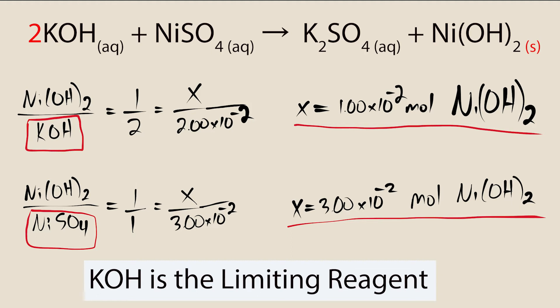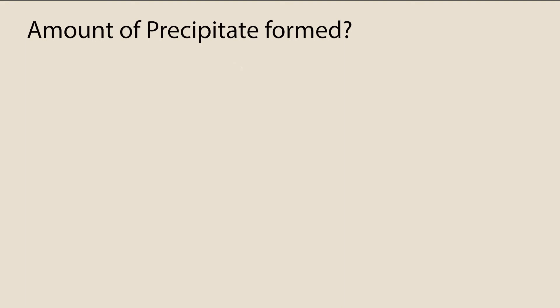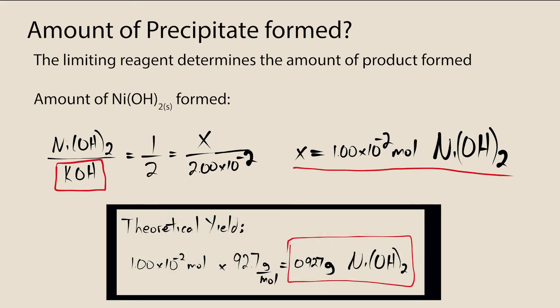Conceptually, this means that once 1.00 × 10⁻² moles of nickel-2-hydroxide forms, the potassium hydroxide will be fully consumed and no more precipitate can form. By figuring out the limiting reagent, we've basically figured out the theoretical yield of precipitate. The amount of precipitate that can form is based off of the limiting reagent. Typically you are asked to calculate the theoretical yield of precipitate in grams — simply use the molar mass of the precipitate along with the theoretical yield in moles to calculate the theoretical yield in grams.